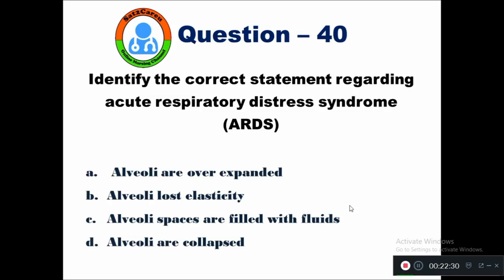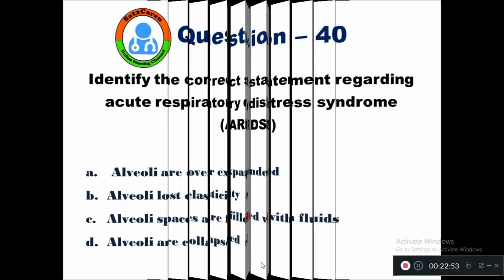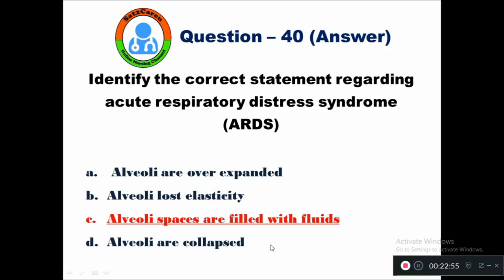Question 40: Identify the correct statement regarding acute respiratory distress syndrome — option A alveoli are overexpanded, B alveoli lost elasticity, C alveoli spaces are filled with fluids, D alveoli are collapsed. The right answer is option C — alveoli spaces are filled with fluids in acute respiratory distress syndrome.